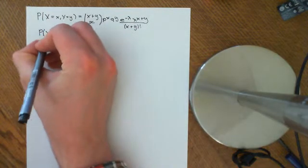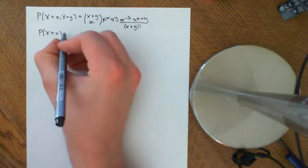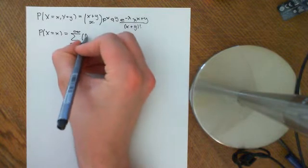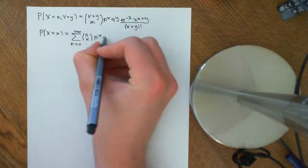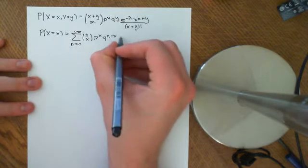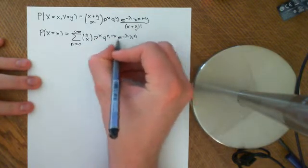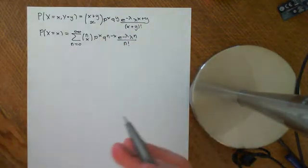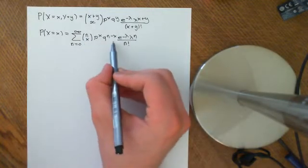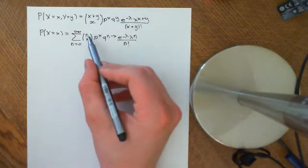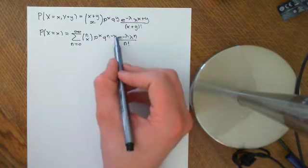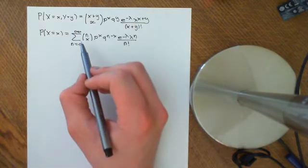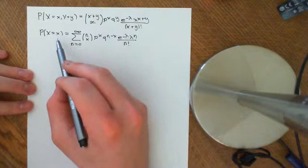We also found that the marginal probability distribution of X as a function of little x was given by the sum from N=0 to infinity of (N choose x) · P^x · Q^(N−x) · e^(−λ) · λ^N / N!. We obtained this through the law of total probability — conditioning on the number of eggs, summing the probability that x of them hatch given N eggs, times the probability she lays N eggs, over every possible value of N.